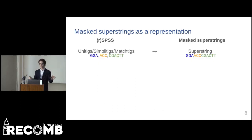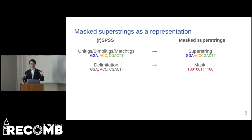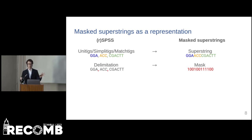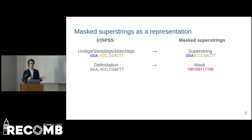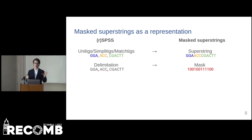To transition from the SPSS representations to masked superstrings, we take a set of strings, concatenate them into a superstring, and create a corresponding mask. One might have a natural objection: how can we claim that all the previous representations are just masked superstrings if we introduce the new concept of a mask? However, in practice one needs to delimit the sequences, and how this is usually done is that the strings are concatenated and somewhere else is stored at which positions a new string starts — but this can be viewed as a compressed form of a mask.